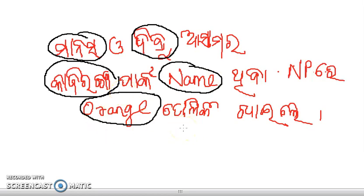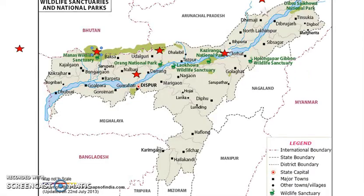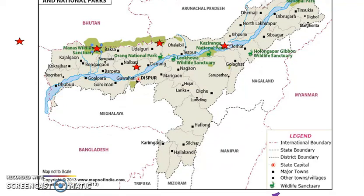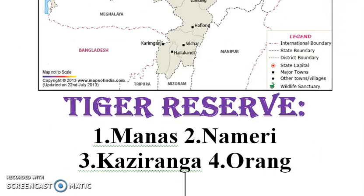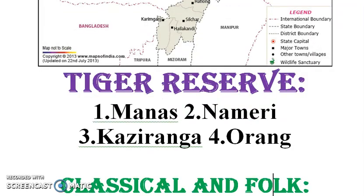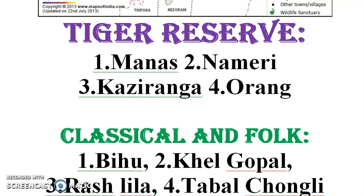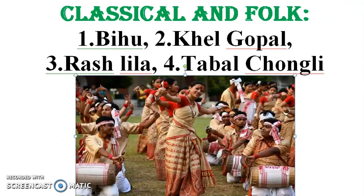Kaziranga National Park, Orang National Park, and Nameri National Park are key national parks in Assam. Kaziranga is also a tiger reserve. The folk dances of Assam include Bihu, Khelgopal, Raslila, and Ojapali — these are the classical and folk dances of the state.